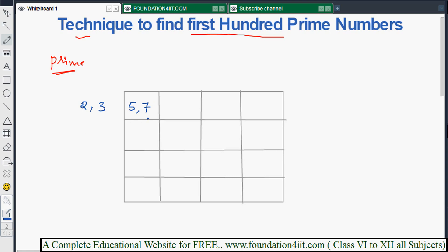Now we follow the magic number pattern: plus 4, plus 2. Starting from 7, add 4 to get 11, then add 2 to get 13. For 13, again plus 4 equals 17, plus 2 equals 19. Continue filling: 19 plus 4 is 23, plus 2 is 25.